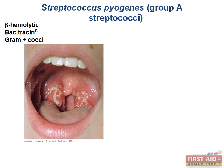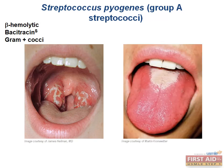Strep pyogenes toxins can also cause scarlet fever. One of the most striking features is a sunburn-type rash that starts on the neck or face and then spreads down the body. Scarlet fever is also associated with a strawberry tongue — the same finding seen in Kawasaki disease, which you will learn about in the vasculitis section.